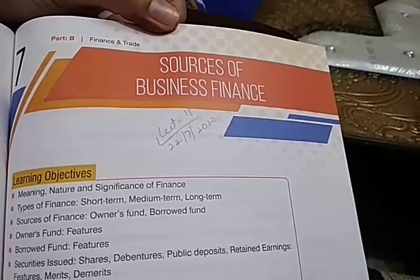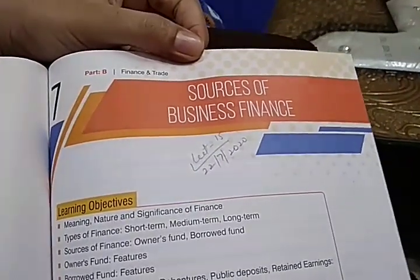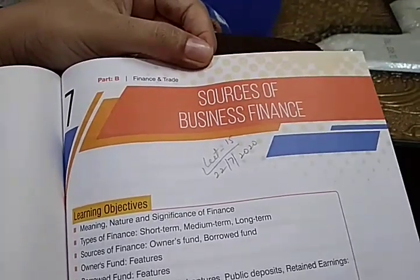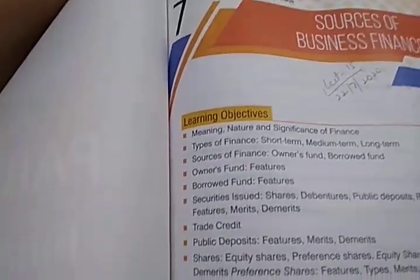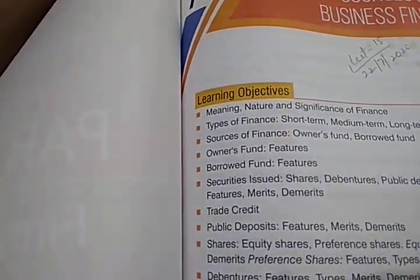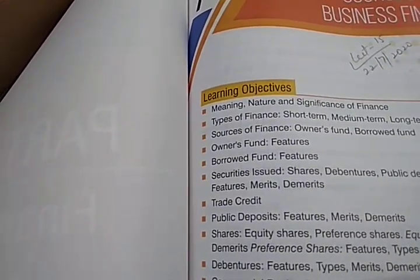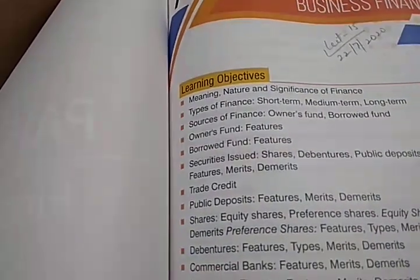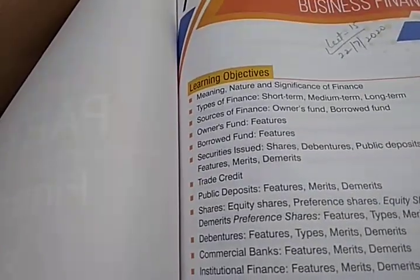Good morning students. In our previous lecture of business studies of class plus one, we started Part B of the book — Finance and Trade — and Chapter 7, Sources of Business Finance, in which we covered the nature, significance, and meaning of finance; types of finance (long-term and short-term); and sources of finance: owner's funds and borrowed funds.